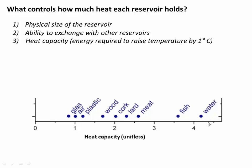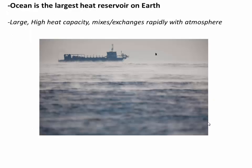Water has this incredibly high heat capacity relative to trees or air, meaning we can keep pouring energy into water and it doesn't heat up very much, making it a great heat reservoir. The ocean is the largest heat reservoir on Earth because it's big, it has high heat capacity, and very importantly it mixes and exchanges rapidly with the atmosphere. It's tempting to think the solid Earth interior is an important heat reservoir, but because it doesn't mix with the atmosphere, it's basically irrelevant to Earth's energy budget.